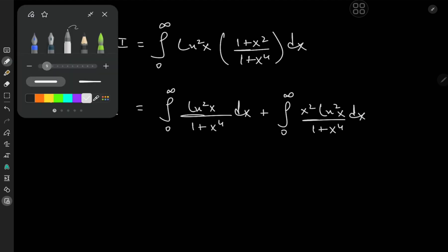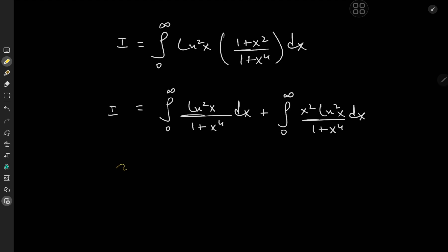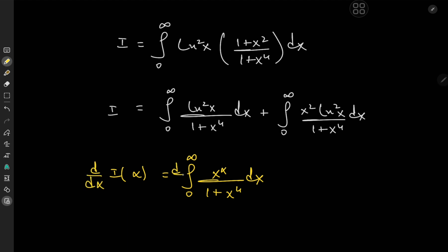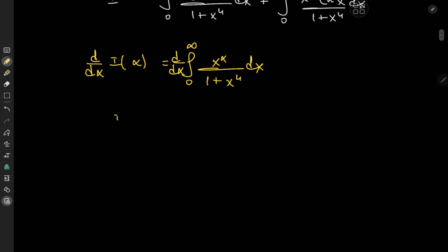We'll adopt a Feynman's trick approach here and define the integral function I(α) as the integral from zero to infinity of x^α over (1 + x⁴) dx. The reason for this is pretty simple: if you differentiate this with respect to α, that yields I'(α) on the left.